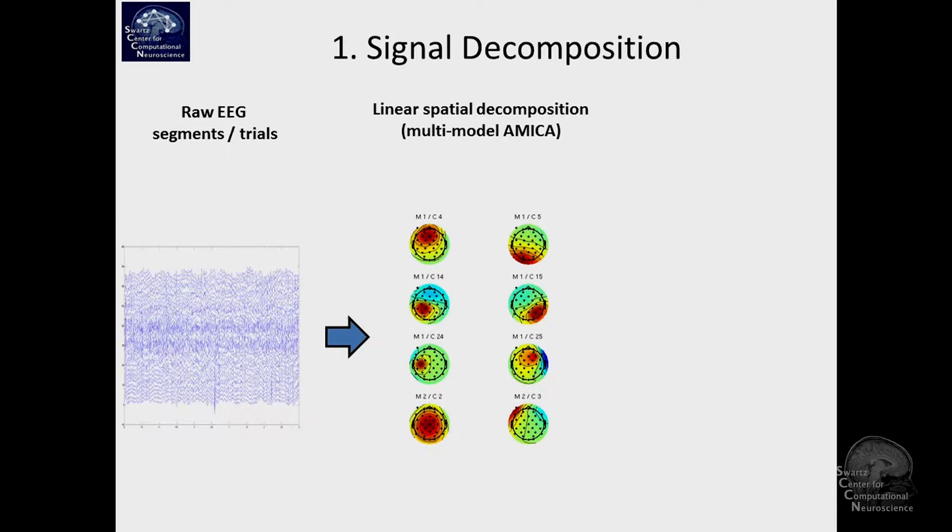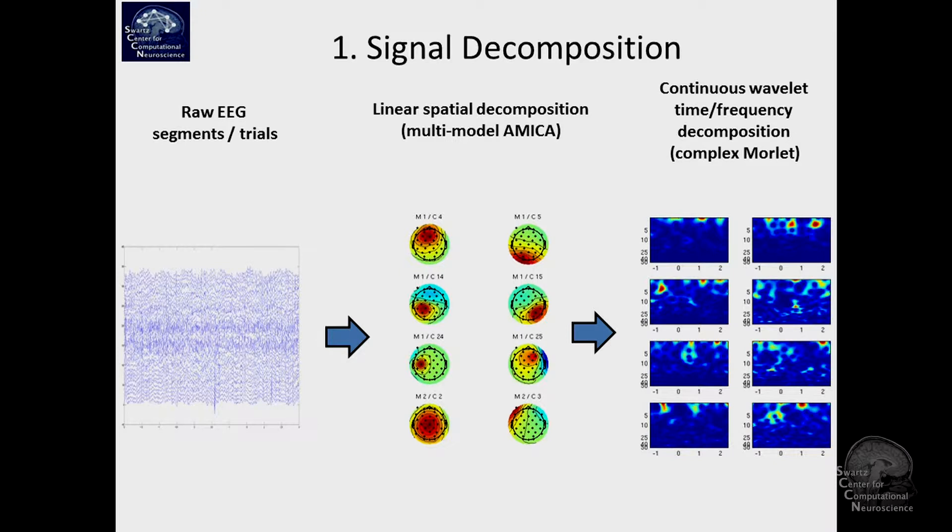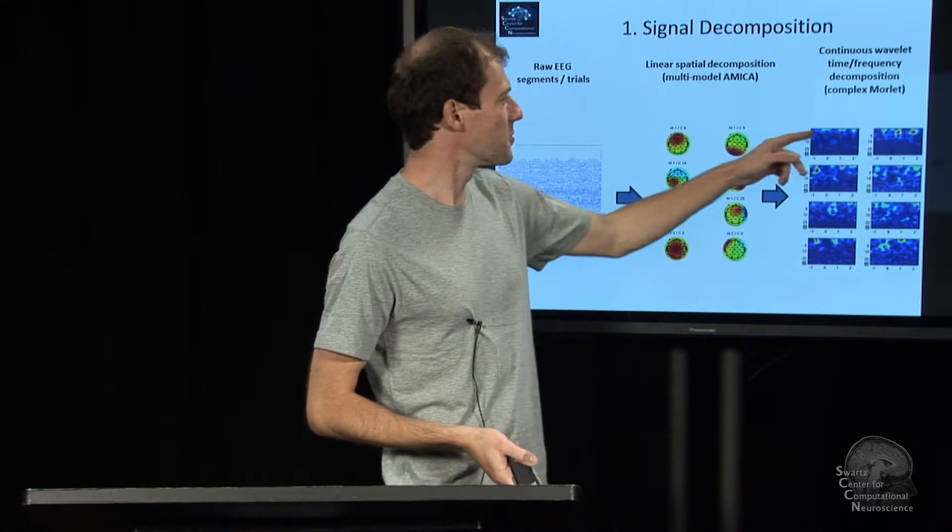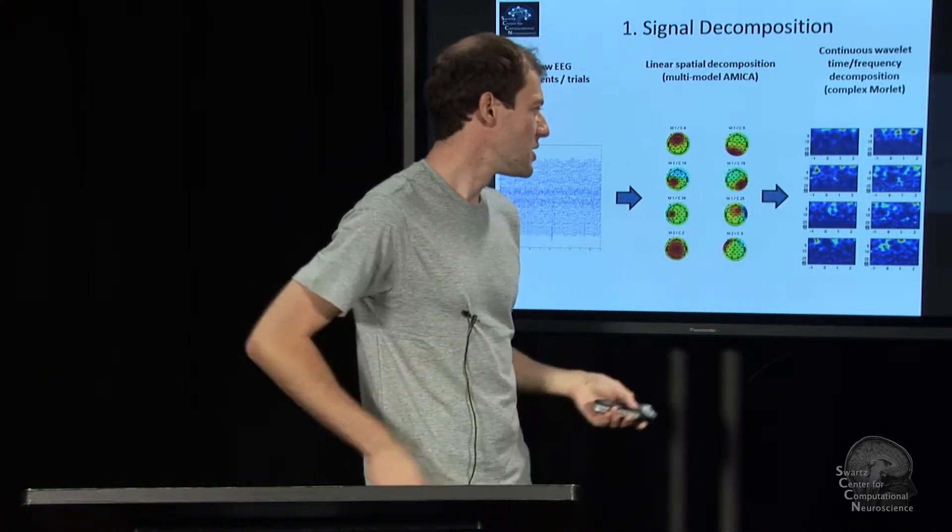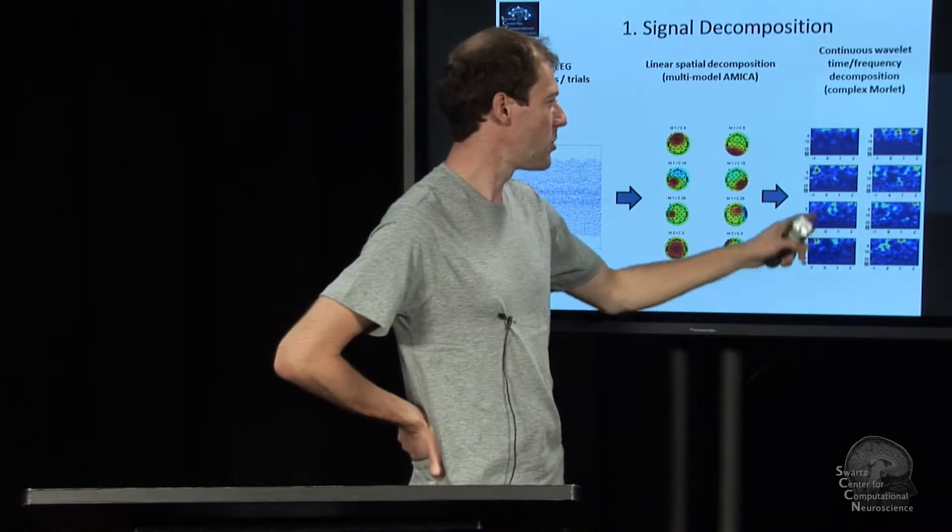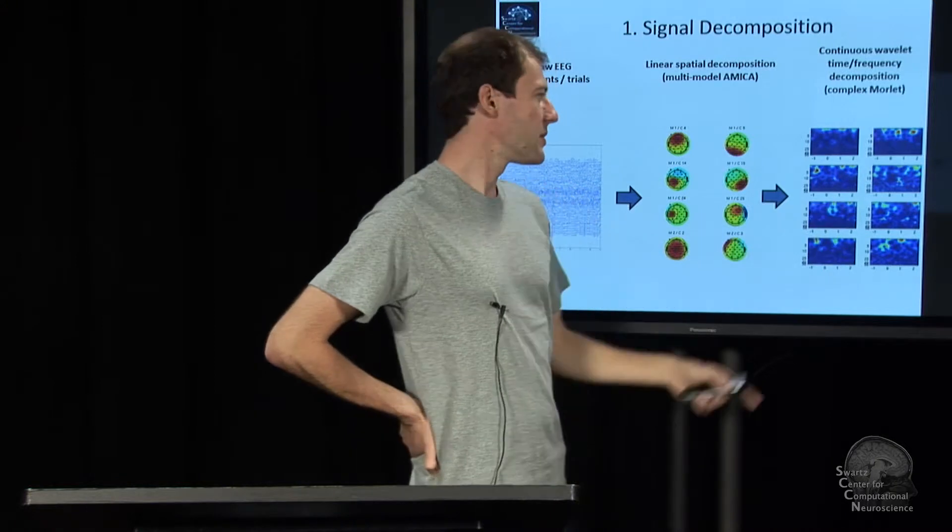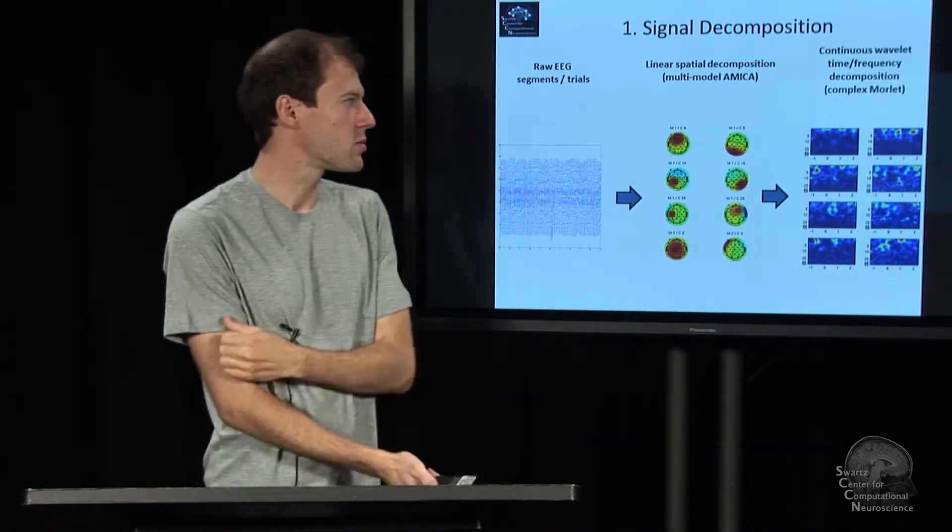What we're using here is a multi-model AMICA. This is a technical detail, but it gives you sort of more components than you had sensors. So the chance goes up that we find what we're looking for. And then for each component time course in this trial, which might be five seconds, we're doing a wavelet, a continuous wavelet transform, which gives us in time and frequency basically, the power for this component. So for this component, we get these features. For that component, we get those features. So this is a time frequency representation for multiple spatially localized components. They are pretty noisy, as you see here. And also, it's many parameters. It's on the order of 300,000 parameters per trial.